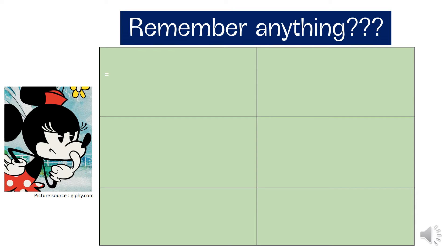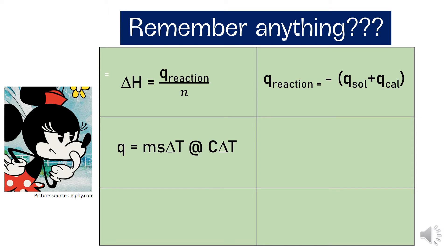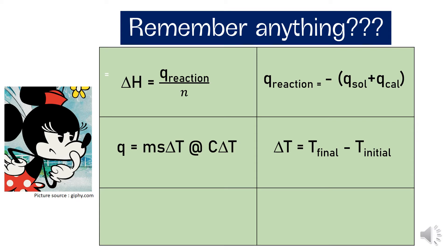Before we perform the calculations, let's check if you remember any formulas. There are 6 boxes here representing the 6 formulas needed. First, delta H equals Q-reaction divided by number of moles, where Q-reaction equals negative of (Q-solution plus Q-calorimeter). Q also equals M times S times delta T, or C times delta T, where M is mass, S is specific heat, and C is heat capacity. Delta T is the temperature change, equal to T-final minus T-initial.